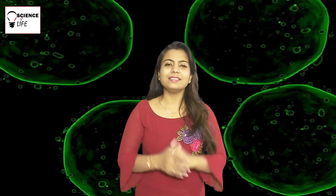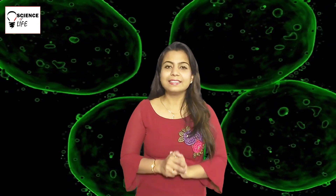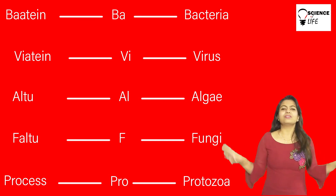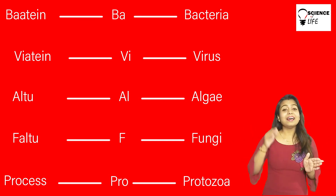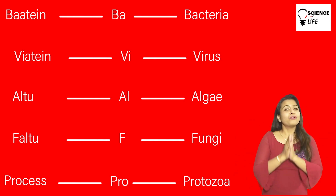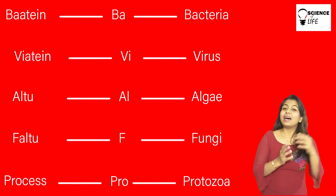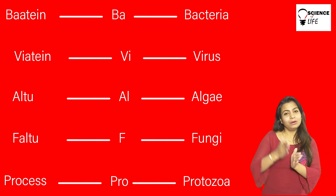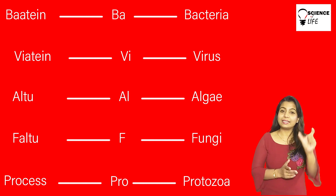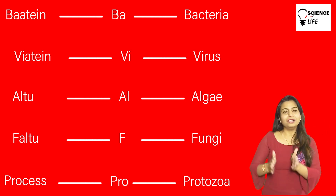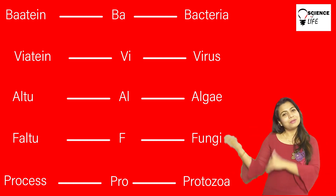How to learn these names? These are very typical names — students normally face this problem. So I have a small technique to learn all these groups. See: 'Baaten, vaten, aaltu, faltu process hai.' From 'baaten' — bacteria; from 'vaaten' — virus; from 'aaltu' — algae; from 'faltu' — fungi; and from 'process' — protozoa. Bacteria, virus, algae, fungi, protozoa. By this simple technique you can easily learn all five groups of micro-organisms.